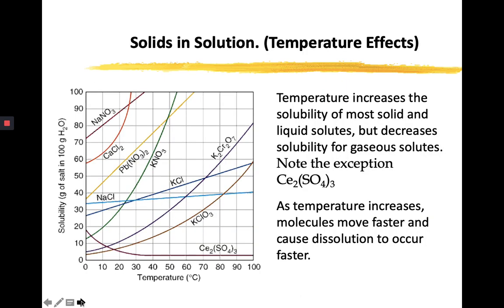So for solids in solution, temperature effects, if you can see here in the graph, as the temperature increases from 0 to 100, there is also an observed upward trend of the solubility, which is the amount of solute that can be dissolved in a particular solvent. So in here it is given in the units grams of salt in 100 grams of water. So it's the amount of salt that can be dissolved in the y-axis, and in the x-axis we have the temperature, which is our independent variable.